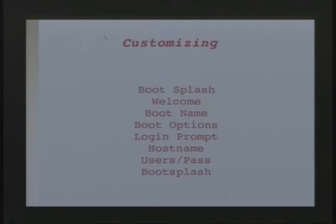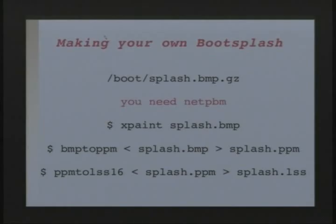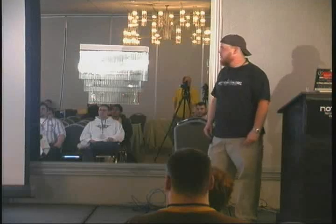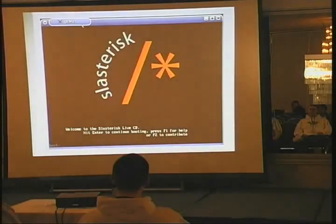Now for customizing Slax. Boot Splash is not very well documented on how to make a .lss file — it's basically a 16-color bitmap. You can go to your boot directory in the Slax CD; it's splash.bitmap.gz. You need to install netpbm, which doesn't come with a lot of distros. Open up your picture editor — I use xpaint because it's plain and simple. After you save it, you make a PPM and convert the PPM to a .lss, put it in your distro, run QEMU, and hopefully it works with your 16-color image.